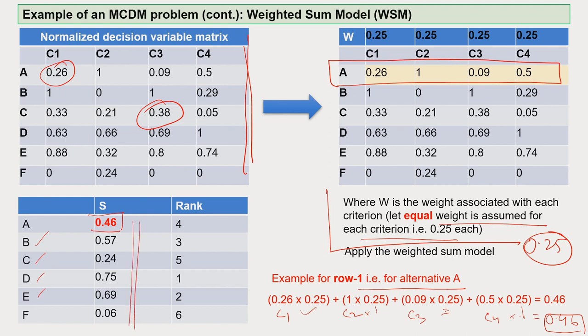Looking at the ranking, alternative D becomes rank 1 and alternative A becomes rank 4. This clearly shows that out of all alternatives, you can identify which one is best to go for. It is a good and easy way to solve the complex situation of choosing an alternative, especially when you have more than one option.